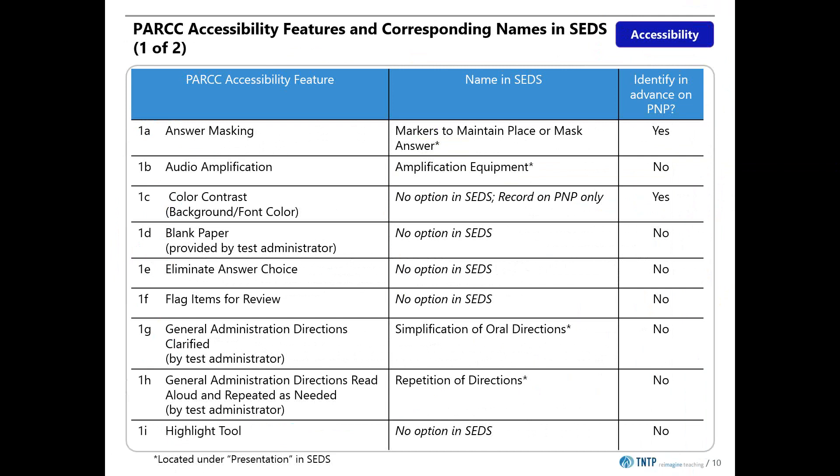This crosswalk shows PARCC accessibility features and their corresponding names in SEDS. For example, adjusting color contrast is a feature available to all students taking the test, but there is no corresponding name in SEDS. This particular option must be identified in advance on a student's PNP. This list continues on the next slide.